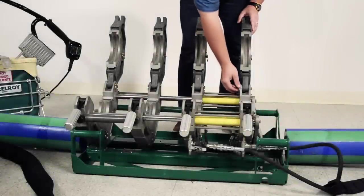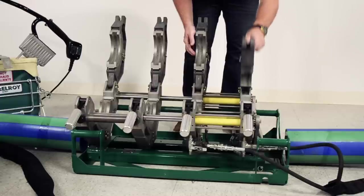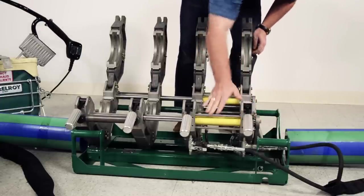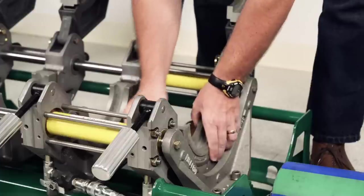Before you begin, take a look at the machine that you will be using and make sure it is in proper working order and as clean as possible. This is also a good time to ensure that you are using the correct size of inserts for the pipe that you will be fusing.